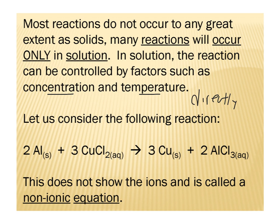Now let's look at an example of a reaction here. We have aluminum solid reacting with copper chloride aqueous, which means it is in solution, to make copper solid and aluminum chloride, which is an ionic compound. This equation here is balanced and does not show the ionic state of the soluble compounds, and it's called the non-ionic equation.